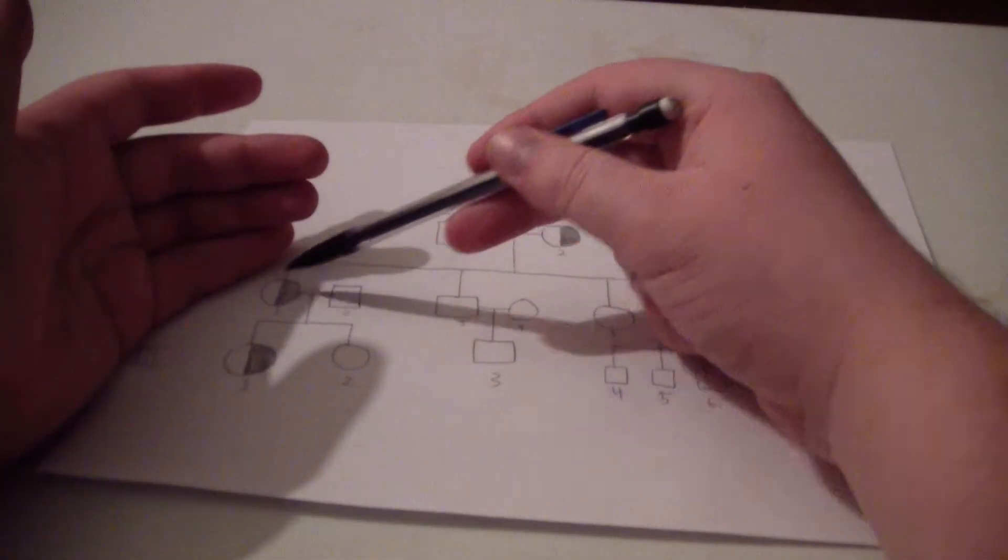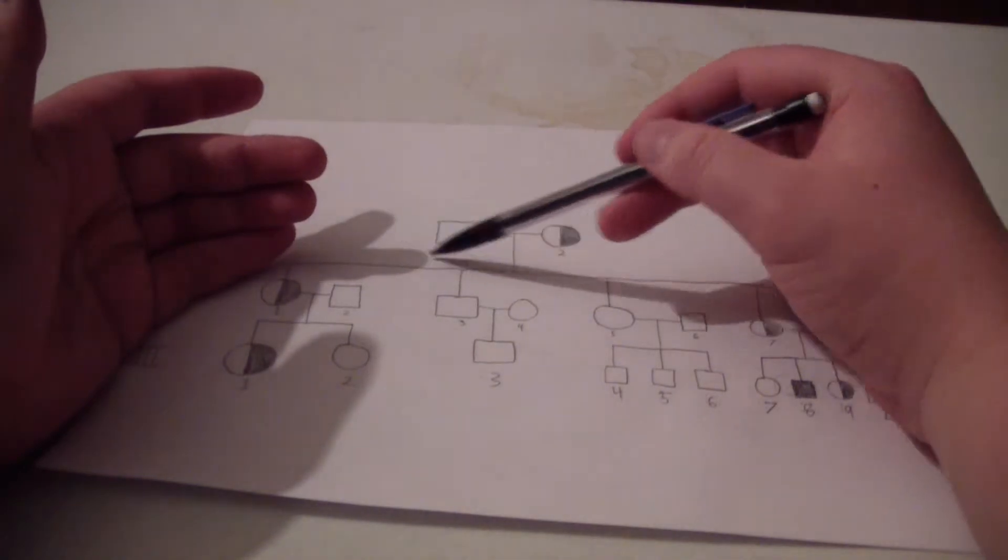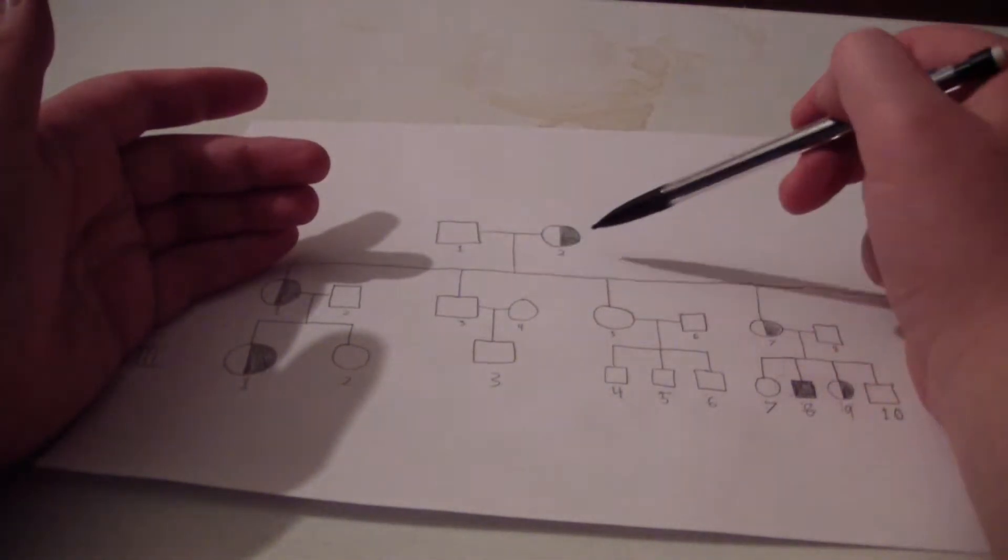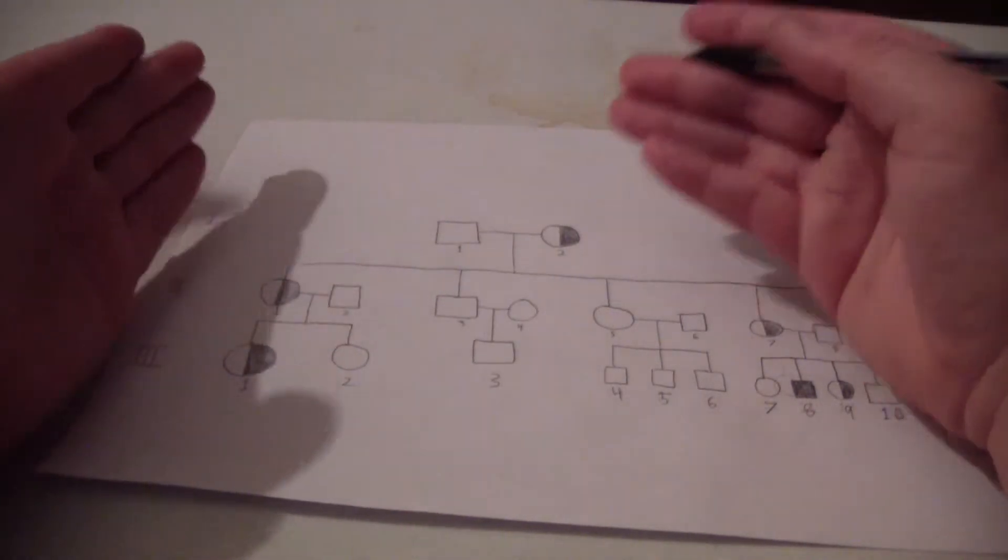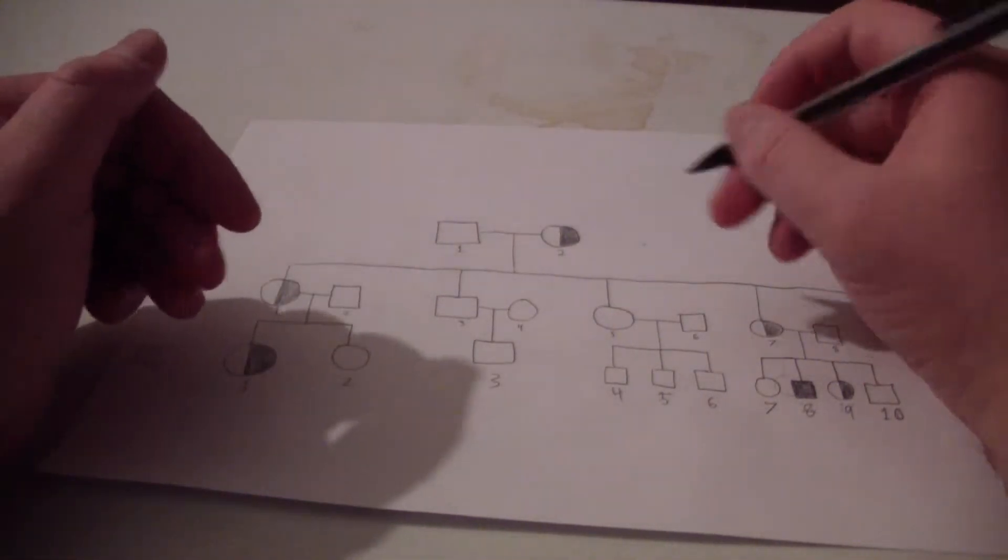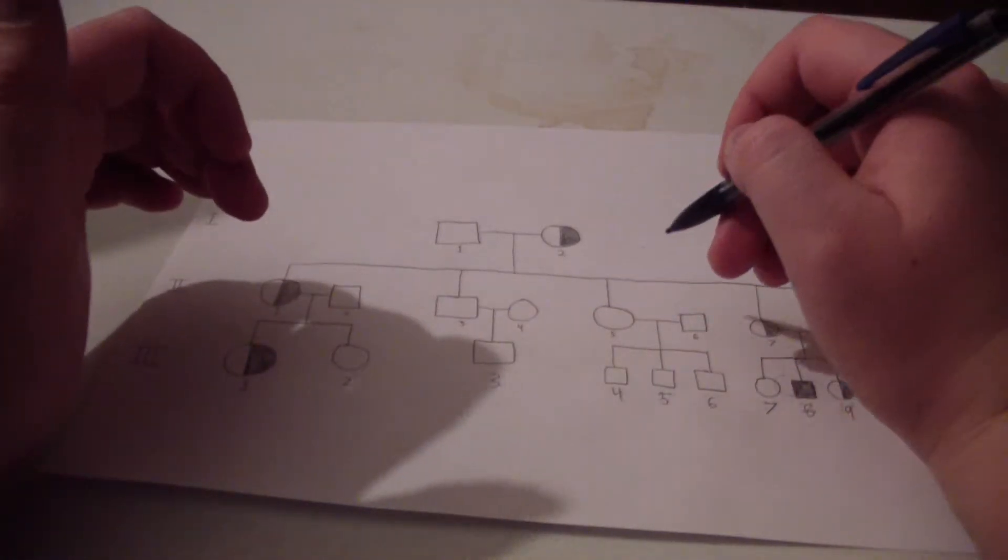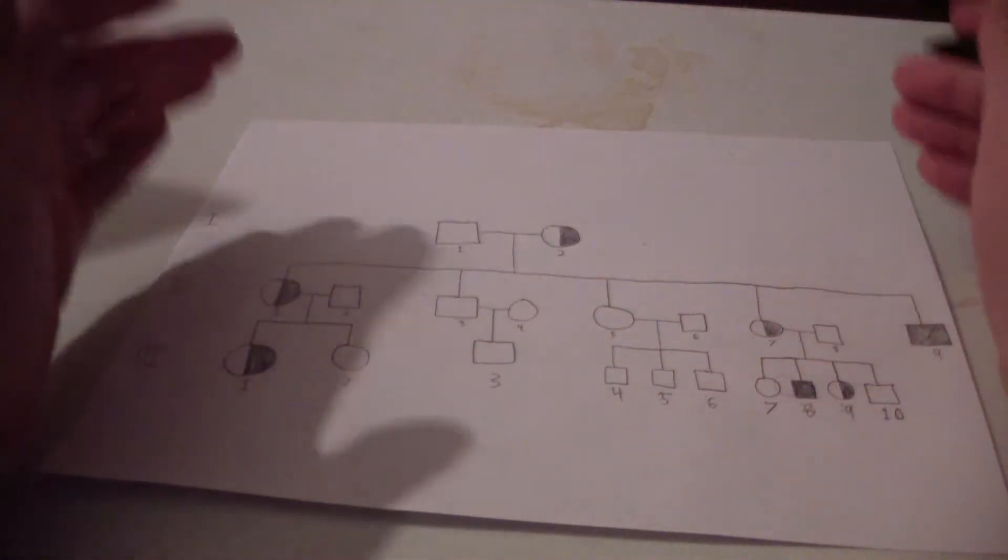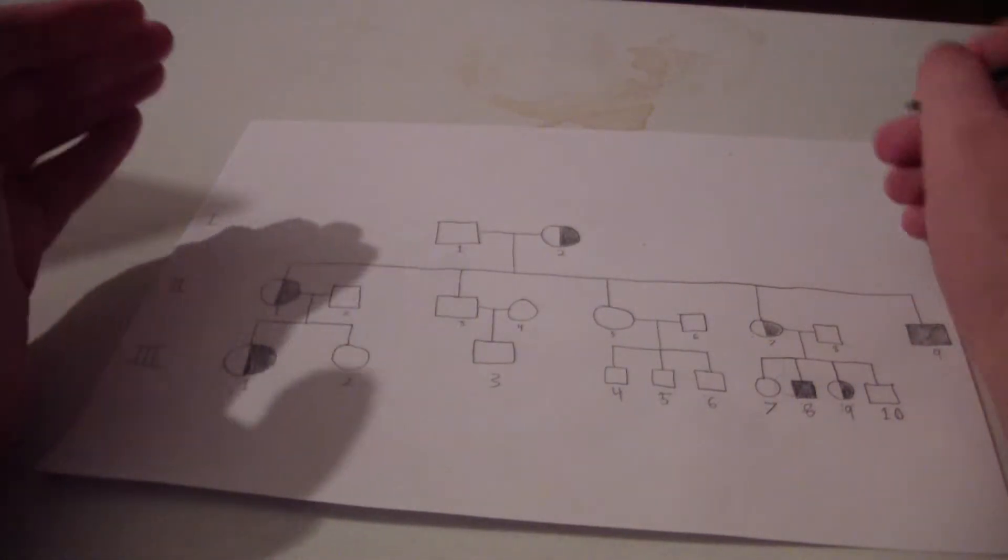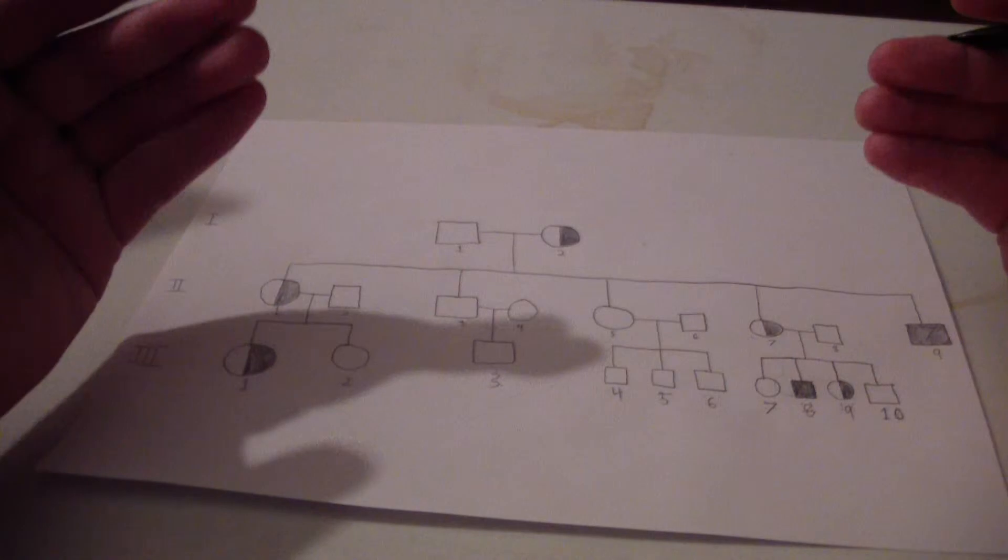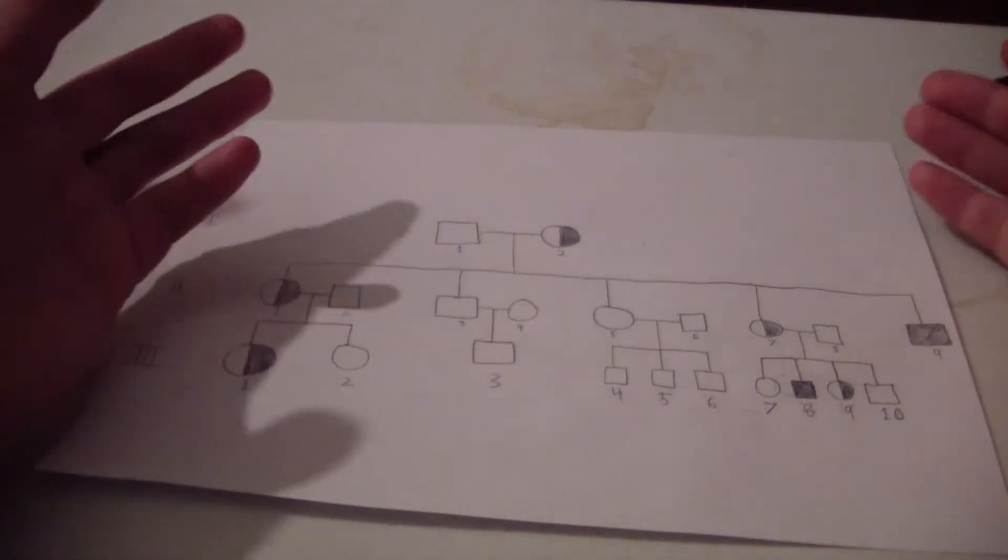We have two females who are carriers. If these two were to go to a genetic counselor and be tested for Lesch-Nyhan disease, the genetic counselor would tell them each of your daughters will have a 50-50 chance of being a carrier, and each of your sons will have a 50-50 chance of actually having Lesch-Nyhan and having it be expressed.